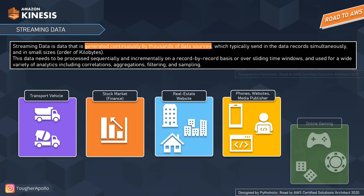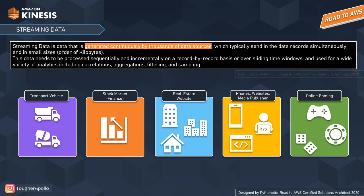A real-world example is transport vehicles: car manufacturers stream real-time sensor data from vehicles during testing so they can monitor performance and detect potential defects in advance, rather than standing next to the car for years. Streaming data is also used in financial applications that keep track of market stocks and fluctuations to analyze risk and consistency patterns.